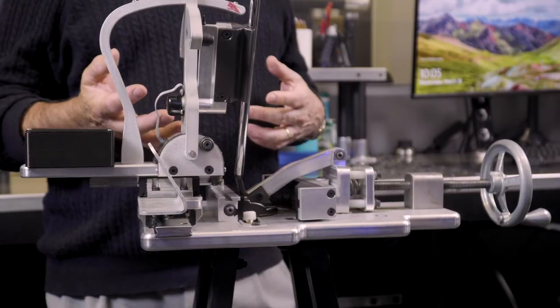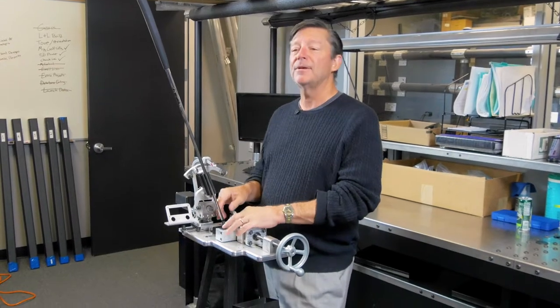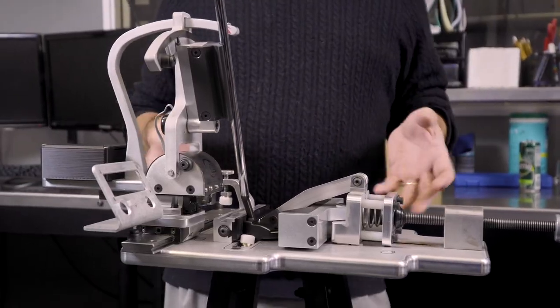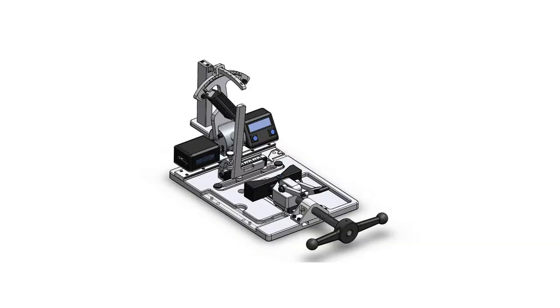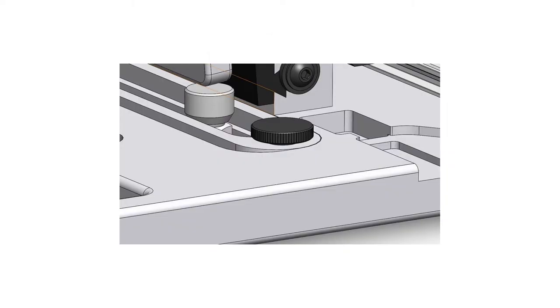This is one prototype we're working on. This is a putter loft and lie machine. Not quite finished yet. We've got a few tweaks to make. This is the last rendition. We have one more that's coming in CAD drawings, which is about ready to produce.